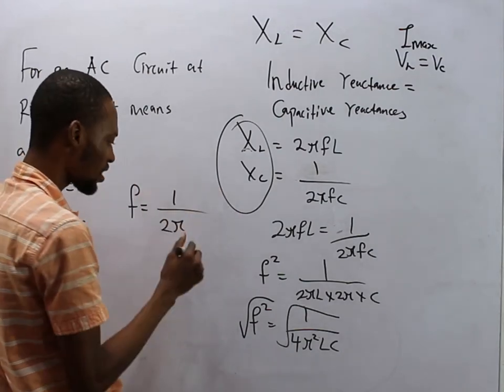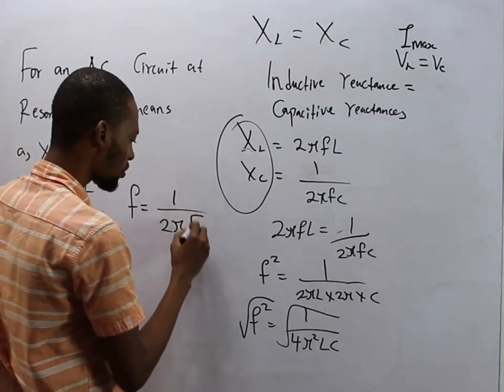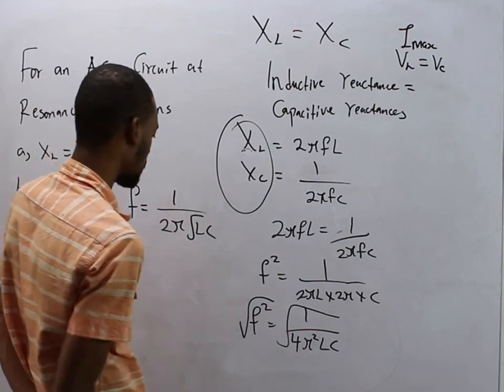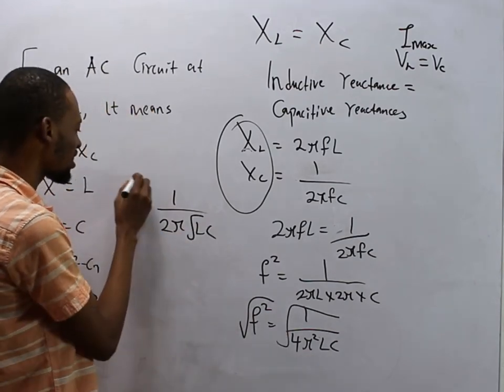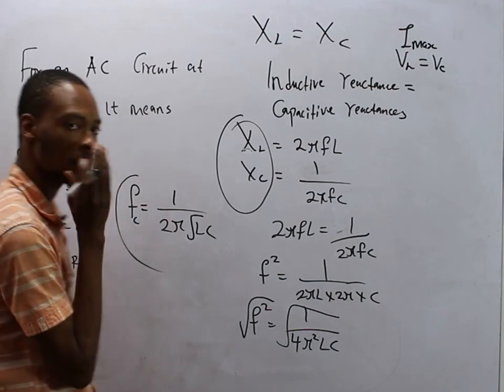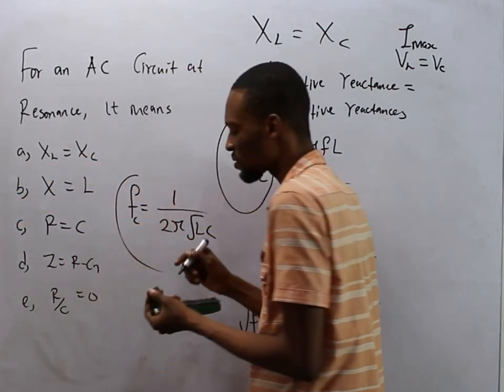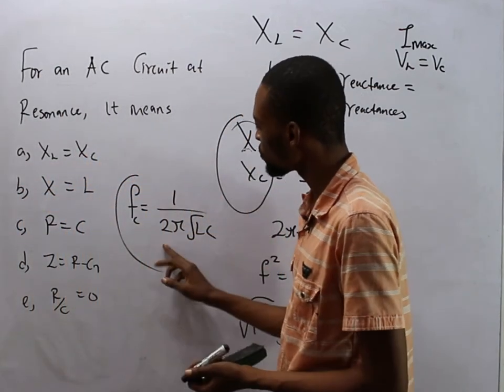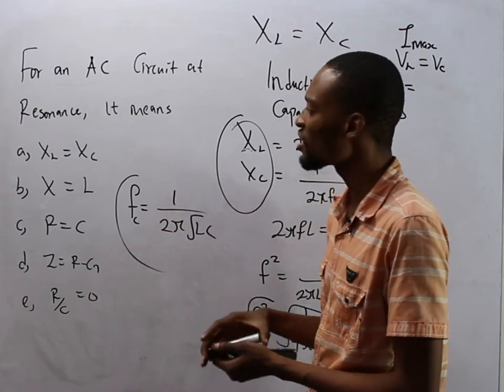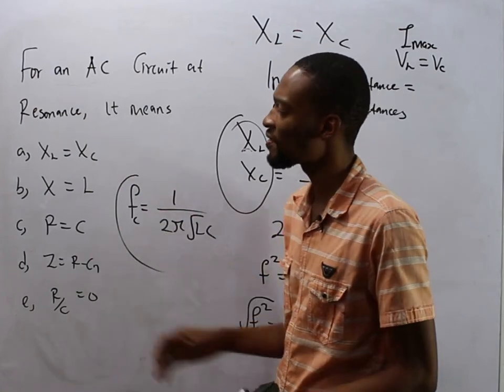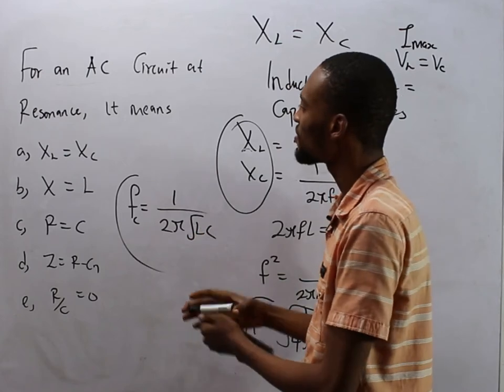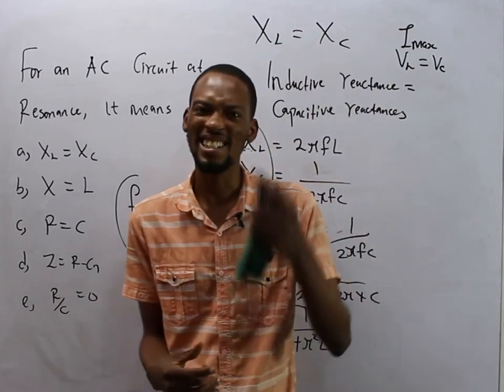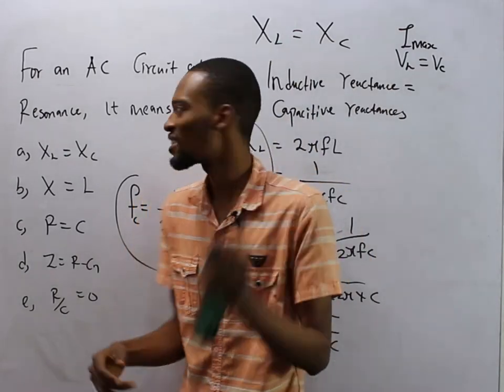So this is referred to as the resonance frequency. When asked to find resonance frequency, it's simply 1 over 2π root LC. So this is the frequency at which the inductive reactance equals capacitive reactance. We call that resonance frequency.